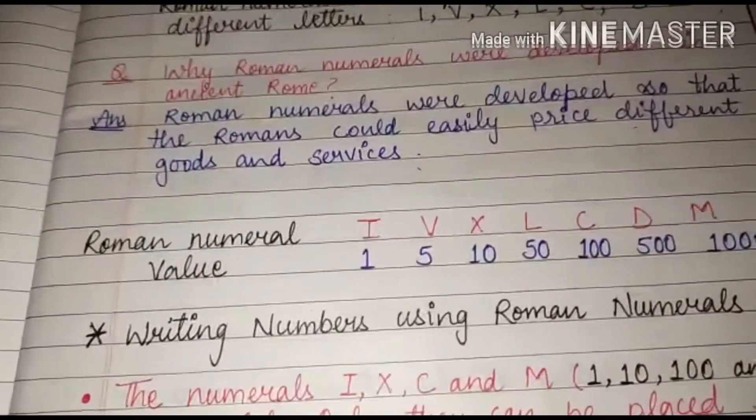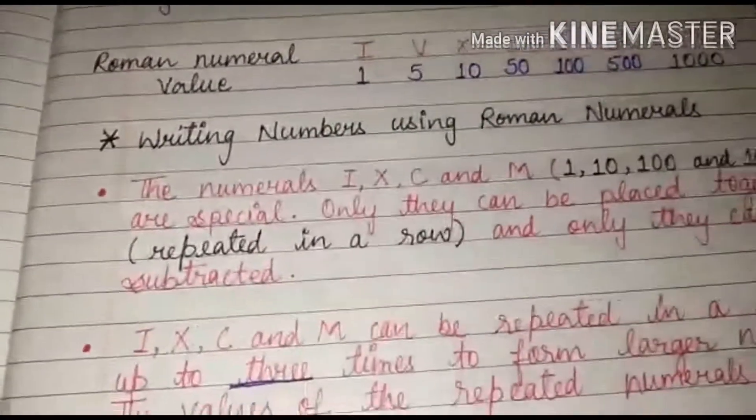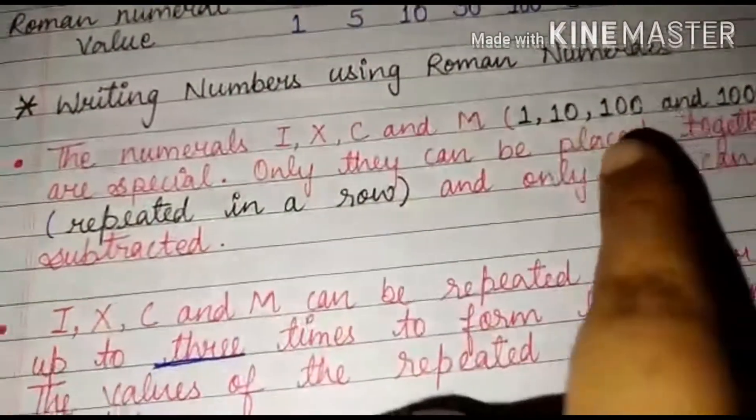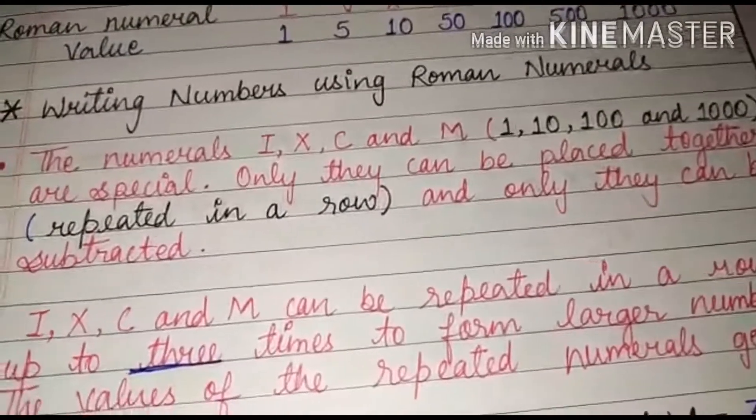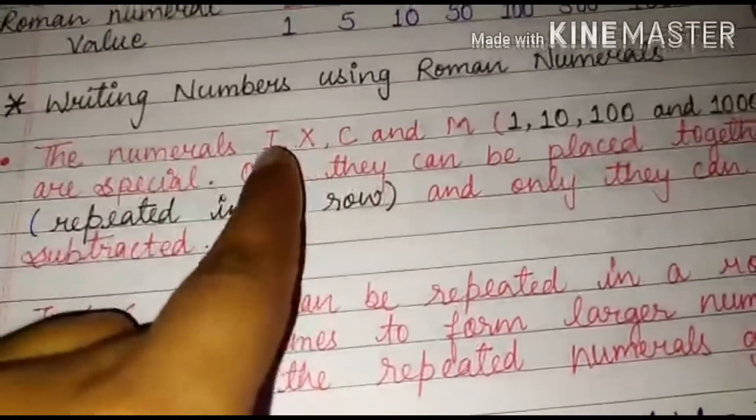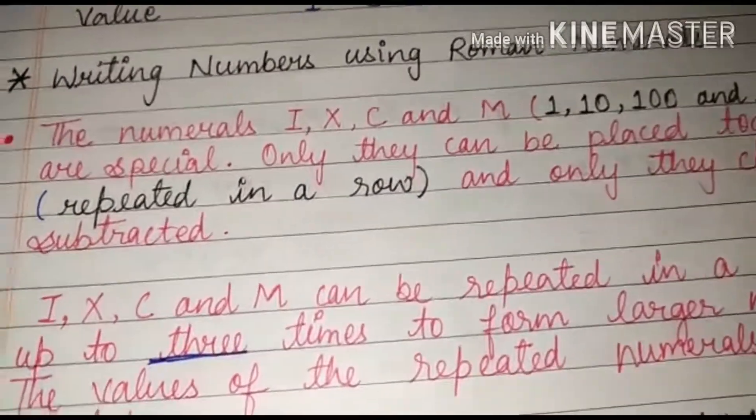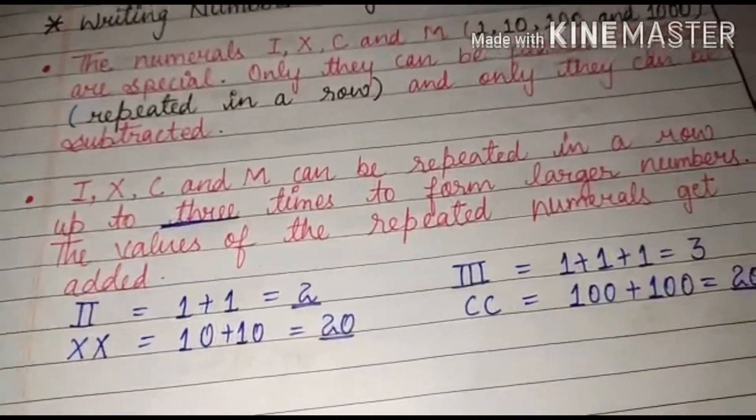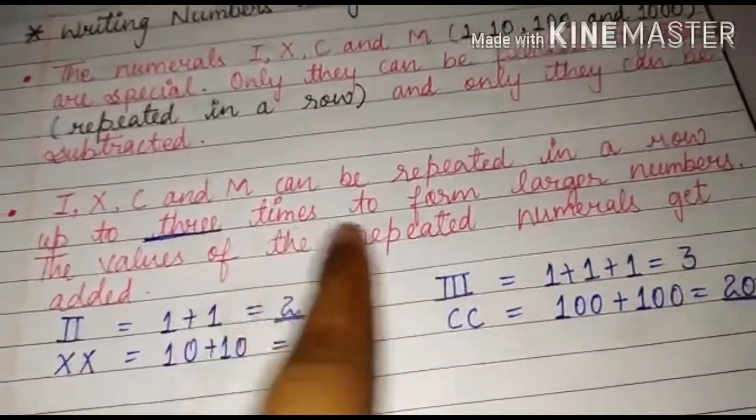Now there are some methods with which we can write numbers using Roman numerals. So first point is the numerals I, X, C, and M, that means I stands for 1, X 10, C 100, M 1000. They are special because they can be placed together in a row and only they can be subtracted. That means if you want to subtract anything you just have to subtract I, X, C, and M only. You cannot subtract V or you cannot subtract L from any number.